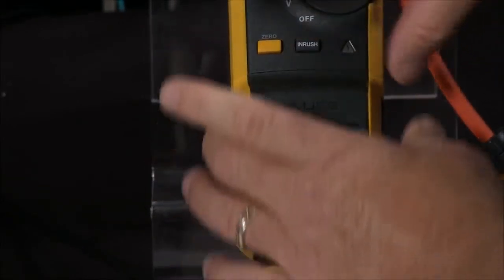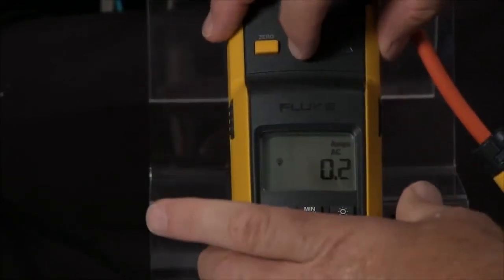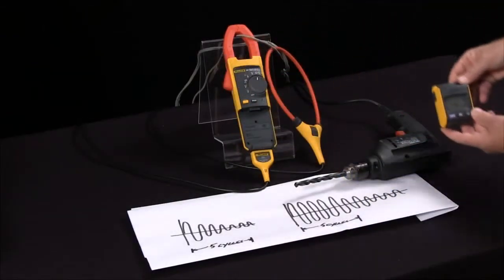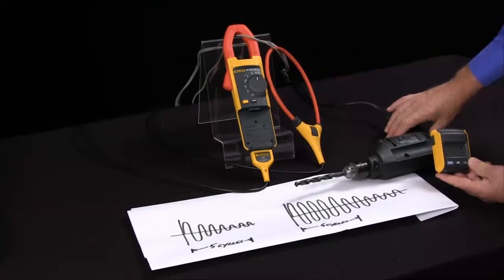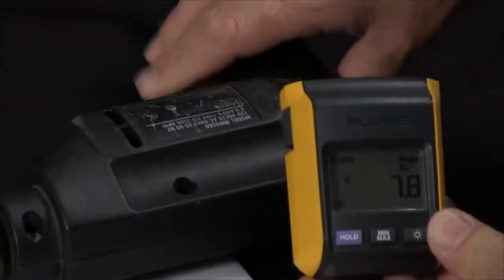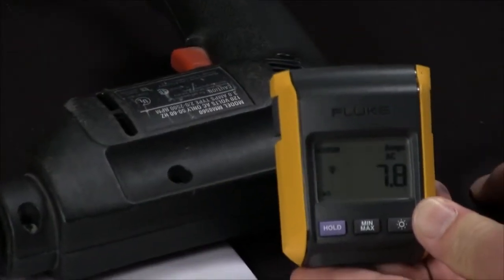Another great feature about the Fluke 381 is we can actually set our meter to inrush, pull our display over to where the motor start cabinet is, start our motor and get our inrush current remotely.